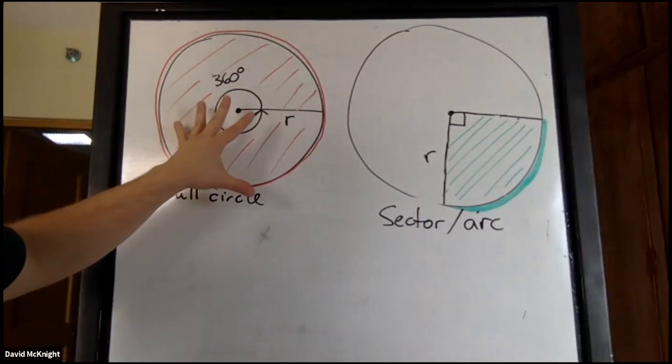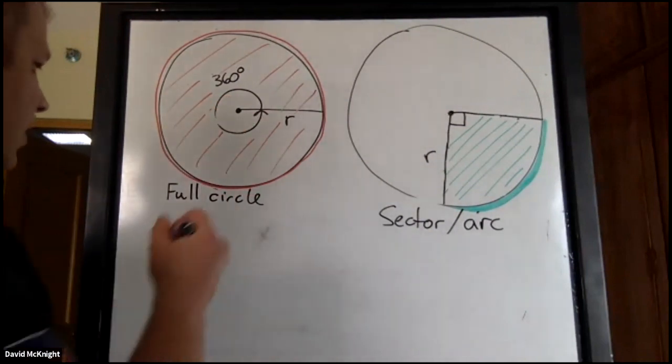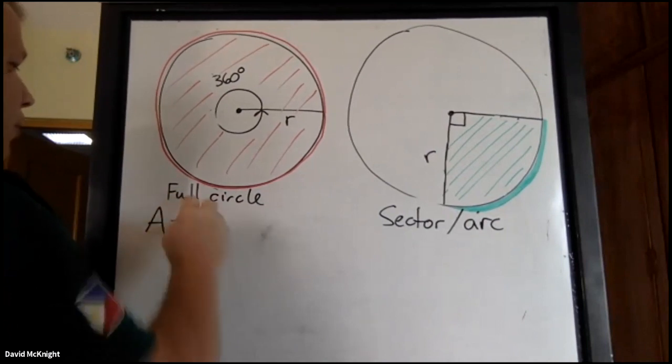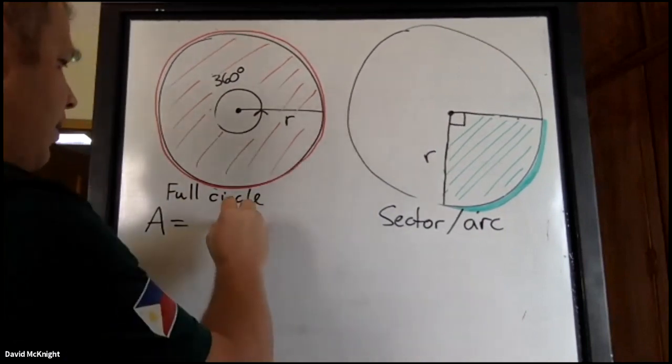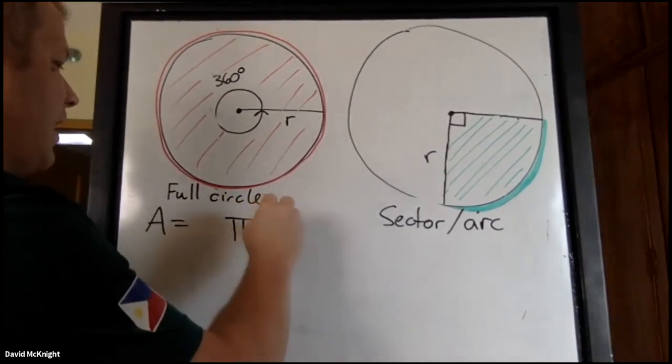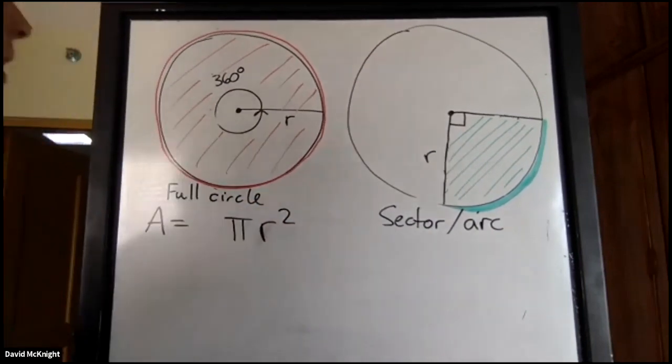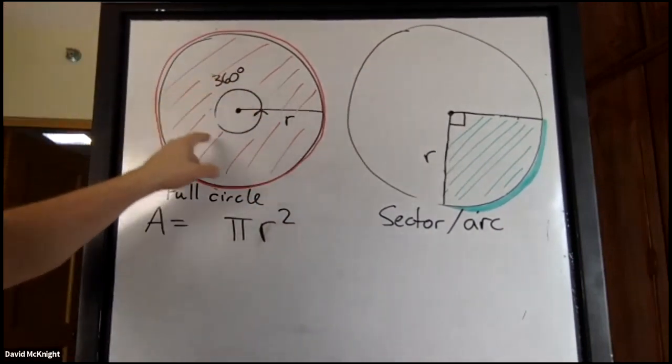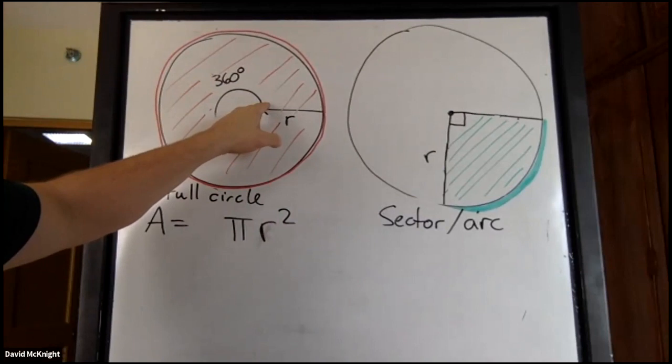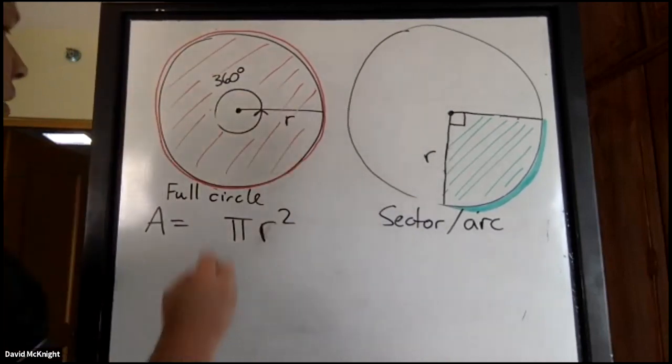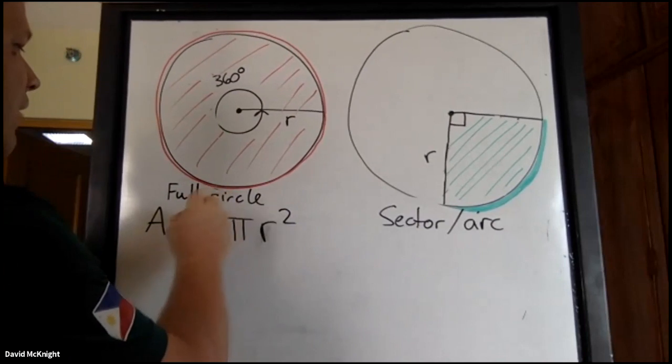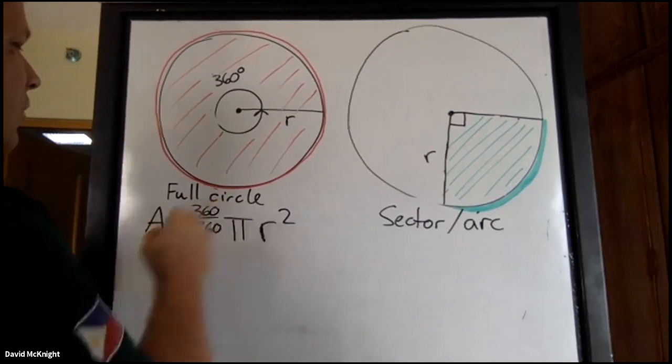So a full circle, just reviewing, if we're looking at the area of a full circle, that was π times the radius squared. And since we've got a full circle, we've got 360 degree angle of a circle, the whole circle. So that's 360 out of 360, which is one. Obviously we don't have to say that because that's just one.